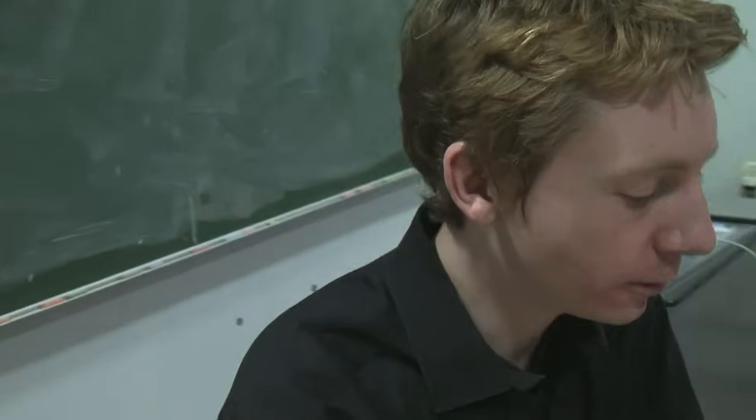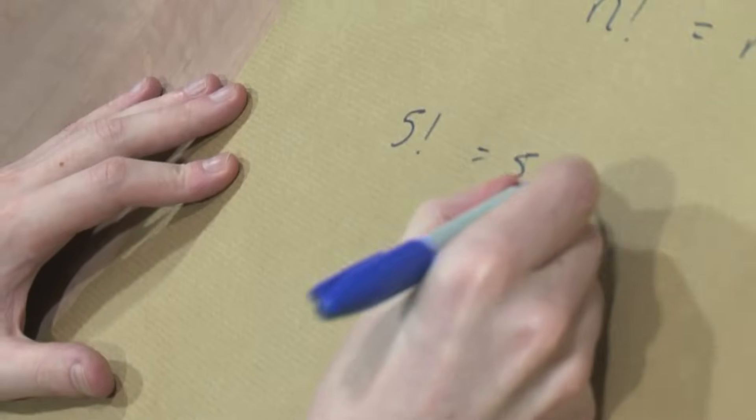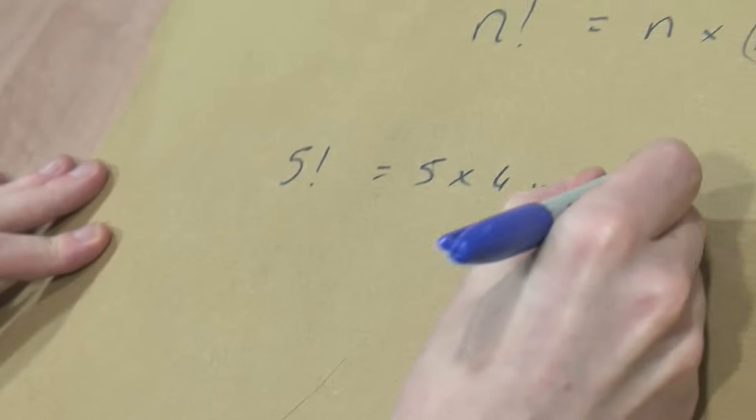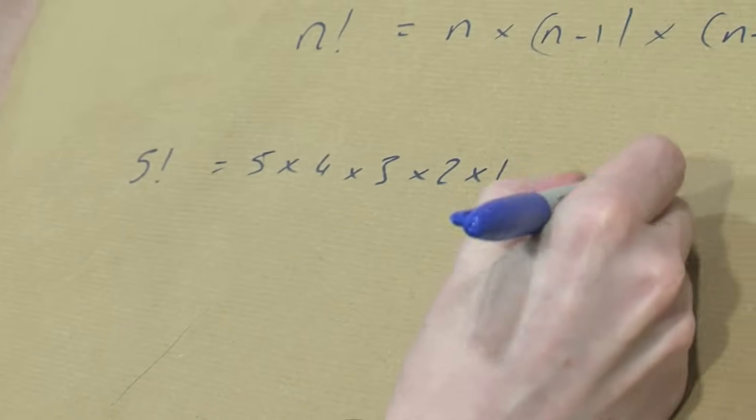Quick example. Let's do 5 factorial. 5 times 4 times 3 times 2 times 1. And if you do that, it's 120.